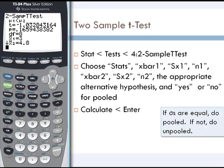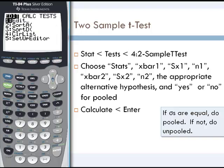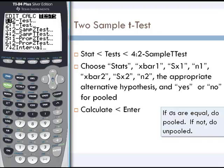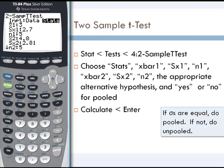Let's suppose that our standard deviation on that second sample was different. Going back to stat test, looking at option 4, let's suppose that instead of 2.81 our standard deviation was actually 5.5.